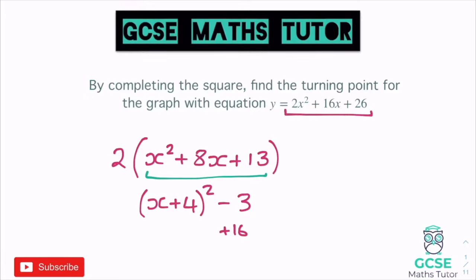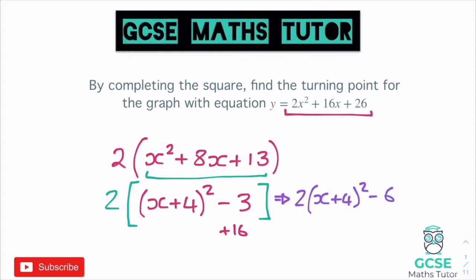Now obviously we can't forget that that 2 exists. That 2 is still at the front there and we have to bring that 2 back in. I'm going to put all of this in a square bracket just to define it as a different set of brackets, and put that 2 back at the front. We're almost done - all I've got to do now is reintroduce that 2, which just means expanding out this square bracket by that 2. We've got two lots of the x plus 4 squared, and then timesing that negative 3 by 2 will leave us with negative 6. And that's in completed square form. The turning point: the x-coordinate is negative 4, flipping the sign, and our y-coordinate is minus 6.